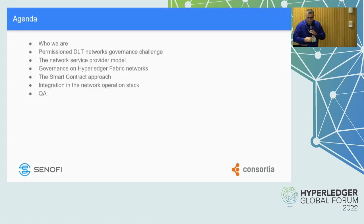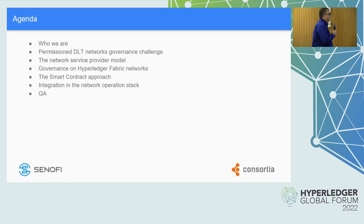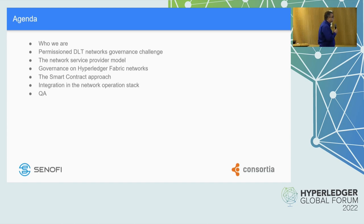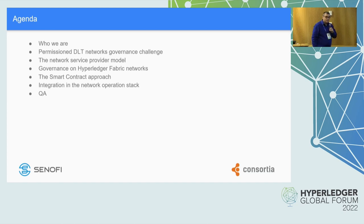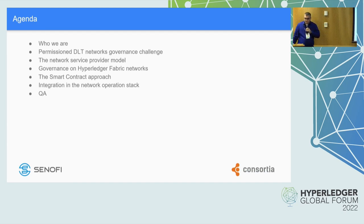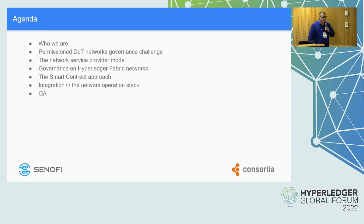A bit of agenda of what I'll be covering: I'll talk about us, just to let you know who we are and what we do. I'll be talking about the network governance challenge we faced throughout different projects. I'll be talking about the network model — how the network nodes are deployed and managed in a production environment. I'll also talk about the governance of those networks and how smart contracts can be used to implement the governance process. Then my colleague Janko will walk you through the technicalities of the smart contracts from a technical perspective.